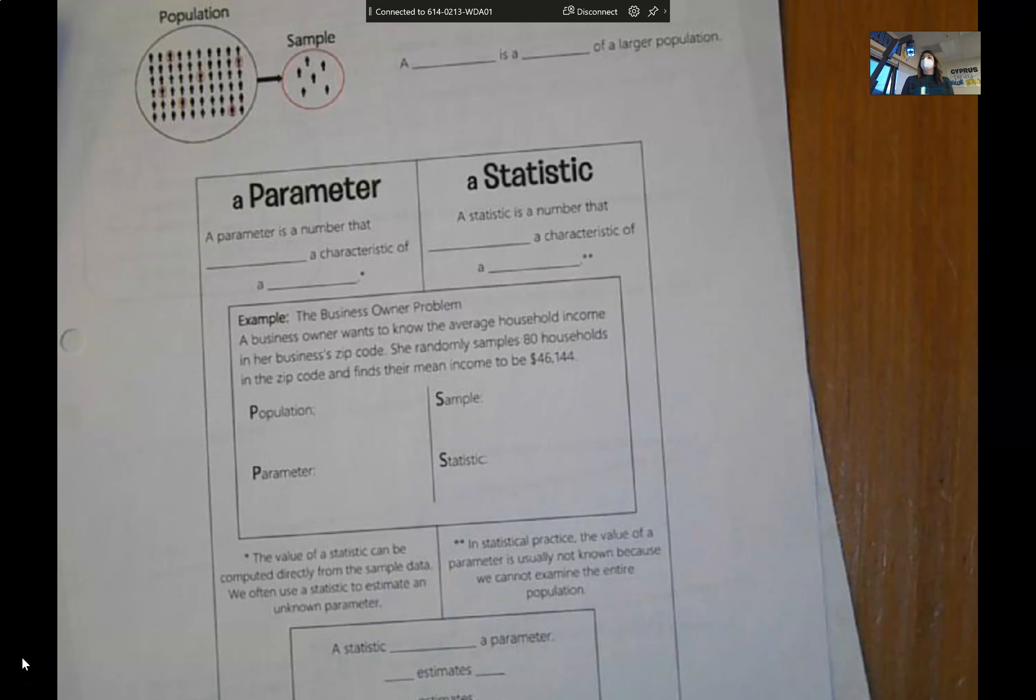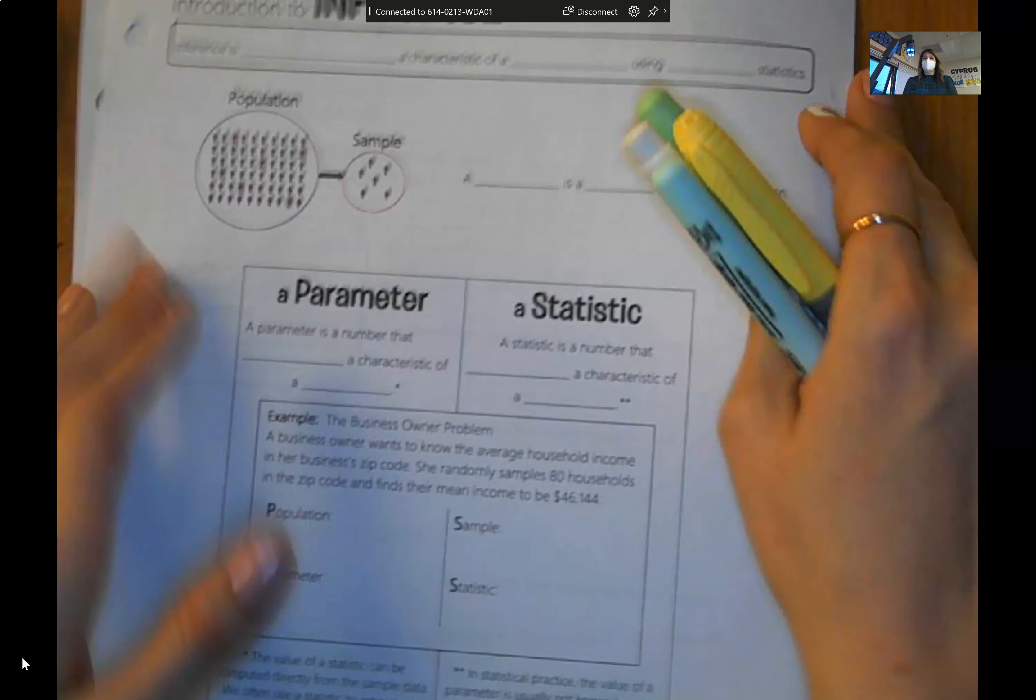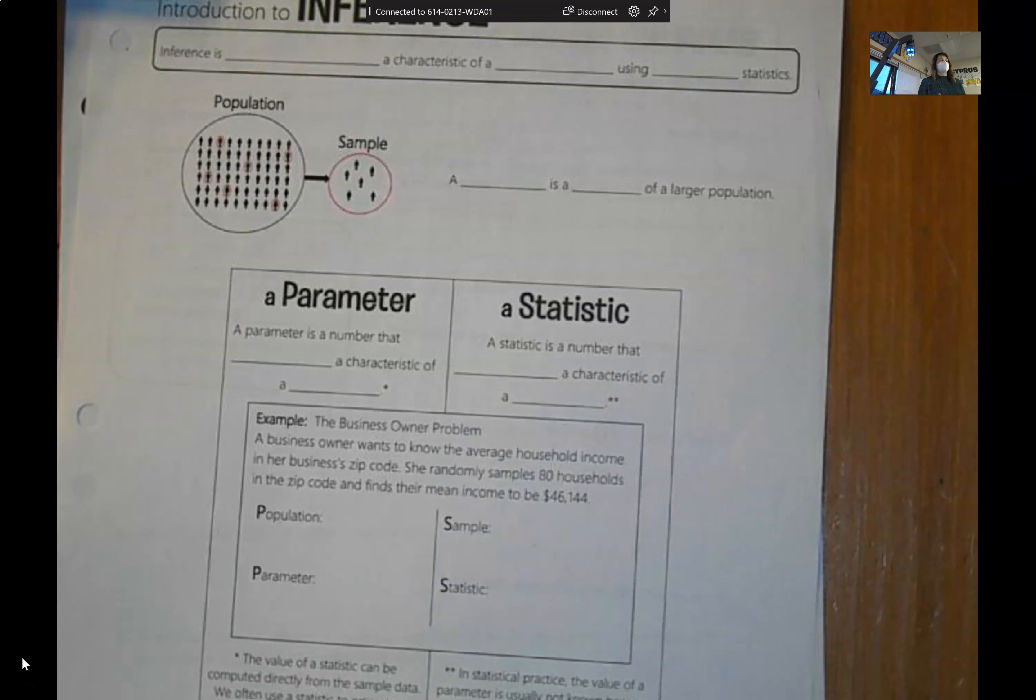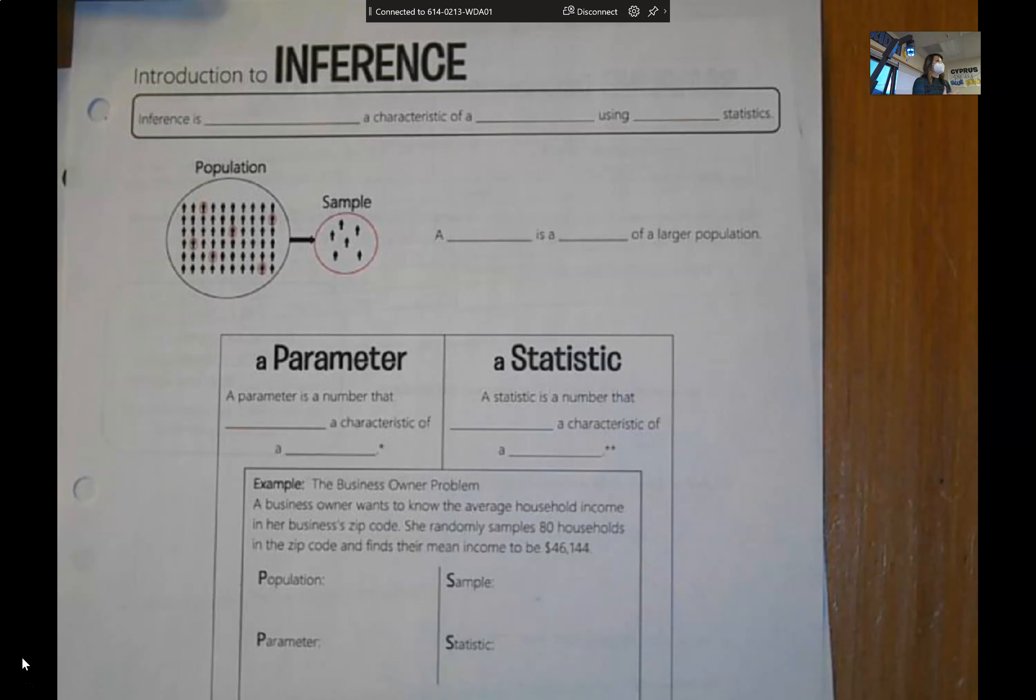So this whole unit is based off of the idea that we want to get information from a population, but getting information from a population can be very difficult. So let's talk about if we wanted to get the average income of the people that live in Magna.